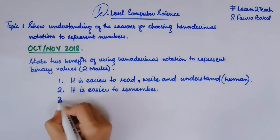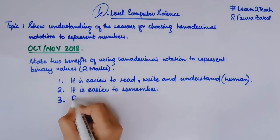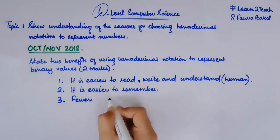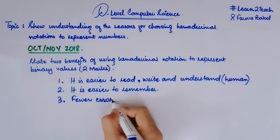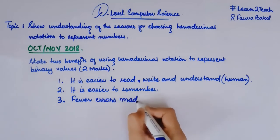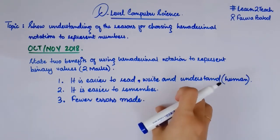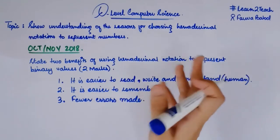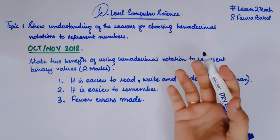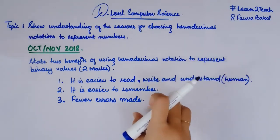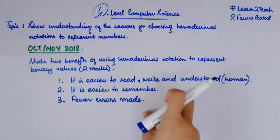The third point can be that fewer errors can be made — fewer mistakes. So I can write it as: fewer errors made, or we can make lesser mistakes in dealing with hexadecimals. Rather than when we deal with binary, we need to write 0, 1, 0, 1, 1, 1, 0, 1 and maybe we get more errors. So here we will be having fewer errors in dealing with hexadecimals.